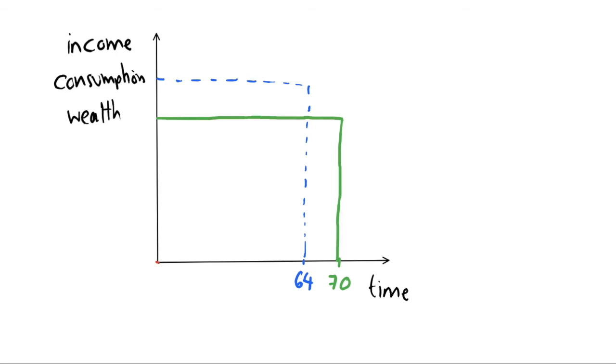But this is the sort of idea we get with the life cycle hypothesis, is that we're planning well into the future and we are smoothing, knowing that we want to keep this exact same consumption even after we retire. And I'm going to draw a final curve which is our wealth curve, and this will just give what our savings are throughout our lifetimes.